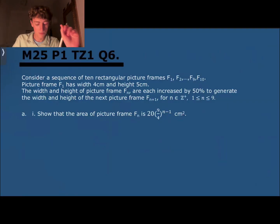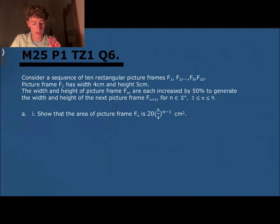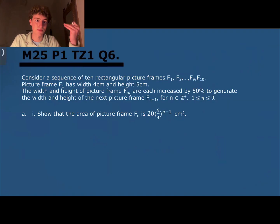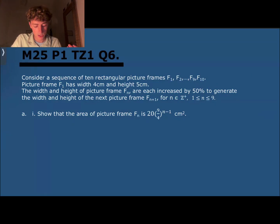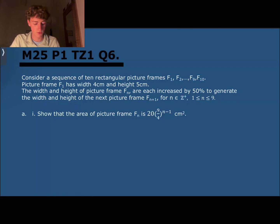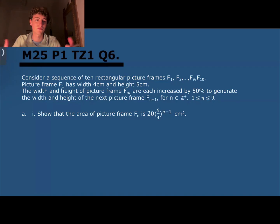We're being told there are 10 rectangular picture frames, f1 to f10. Picture frame f1 has a width of 4 centimeters and a height of 5 centimeters, and this increases by 50% with every single picture frame. We have to show that the area of picture frame f(n) is 20 times (9/4) to the power of n minus 1. This is clearly going to be a geometric series because it's increasing by 50%, meaning by a factor of 1.5.